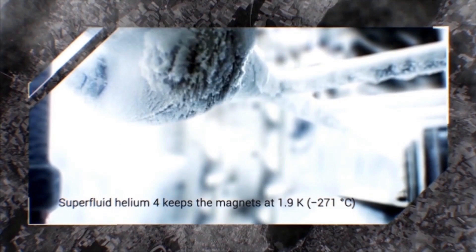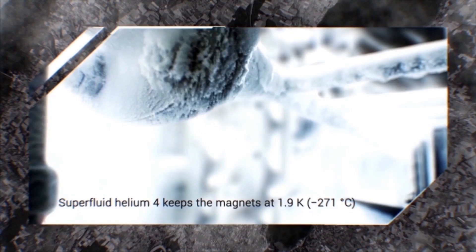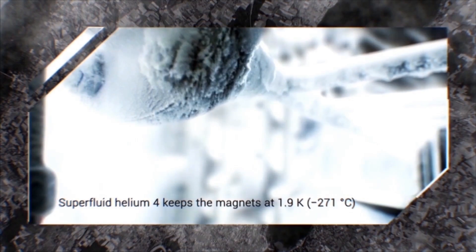Superfluid helium-4 keeps the magnets at 1.9 Kelvin, that's minus 271 centigrade, colder than outer space.